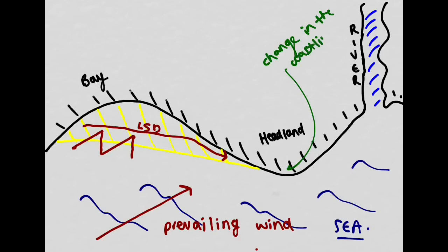We have a distinct change in the coastline at this point, and this change results in sediment beginning to be deposited at the end of the headland. As sediment shifted down by longshore drift reaches this change in coastline, it has nowhere else to go and starts depositing, accumulating on the corner of the headland. Over time, with sediment continually shifted down the coast, we get a gradual build-up that extends off the headland — and that essentially is the formation of a spit.